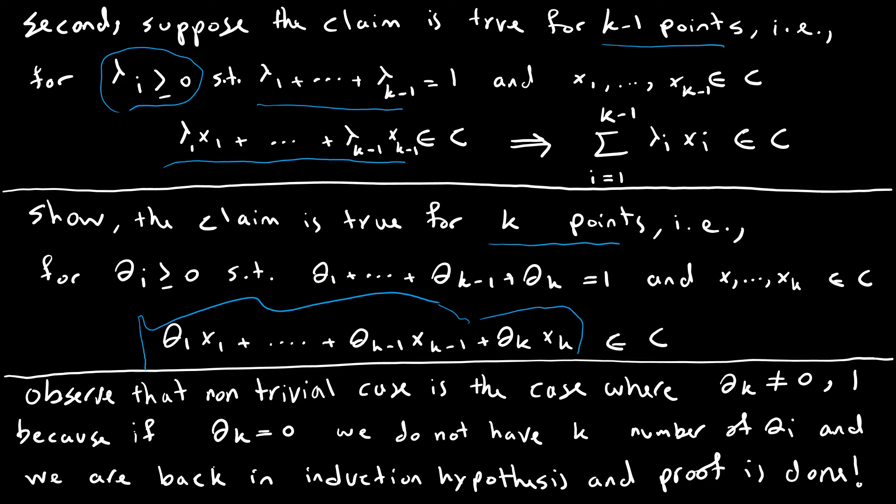Now observe there are two trivial cases. The first case is the case where θ_k equals 0. When θ_k equals 0, we do not have k points. We have k minus 1 points. And once we have k minus 1 points, we're back to the bridge case or induction hypothesis and the proof is done.